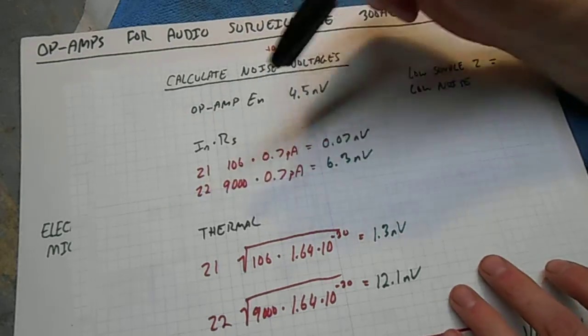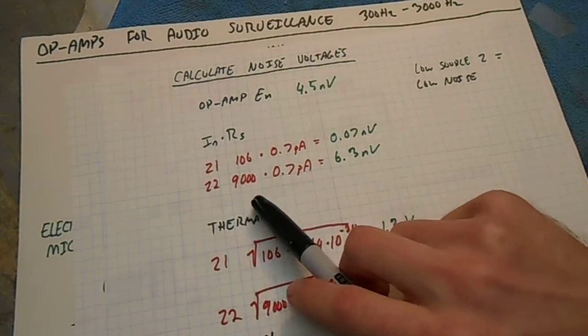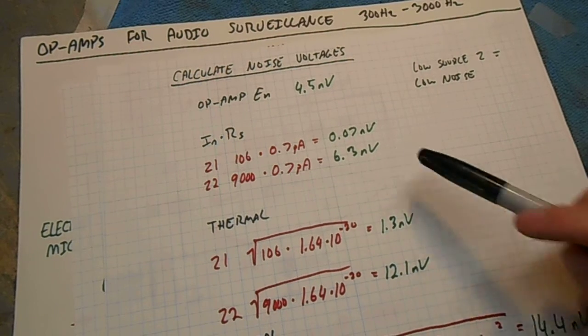And for our Z2, which was the parallel combination of that, 9000 times 0.7 picoamps, we get 6.3 nanovolts.